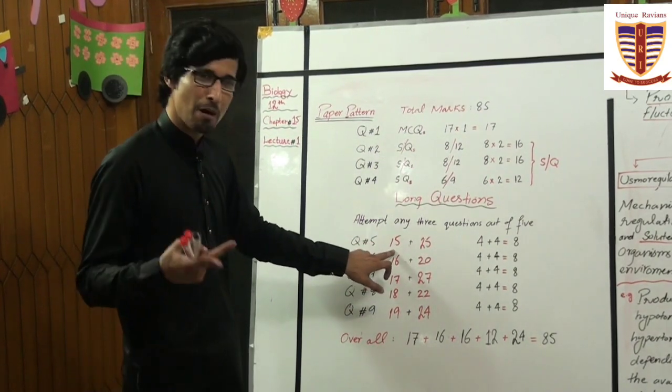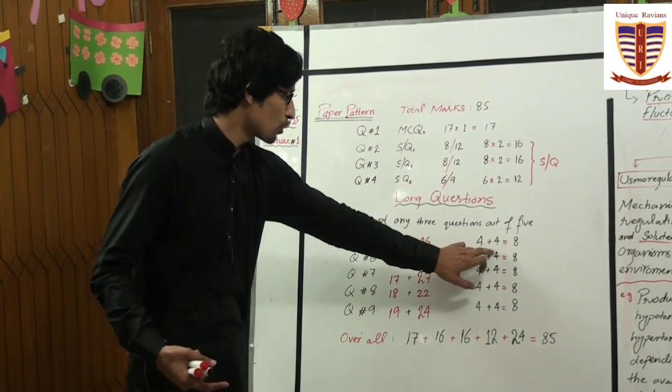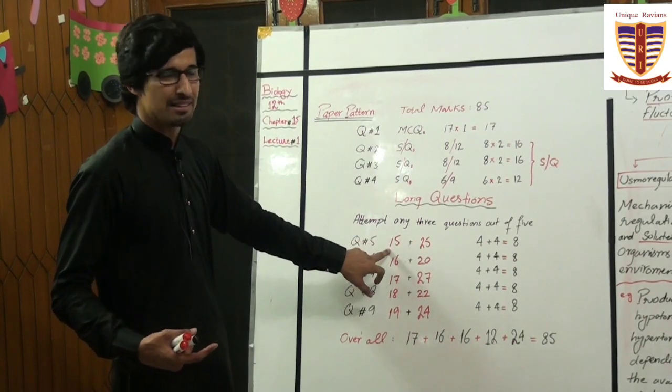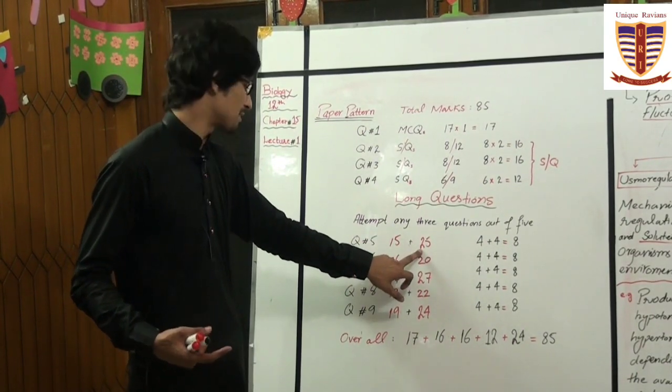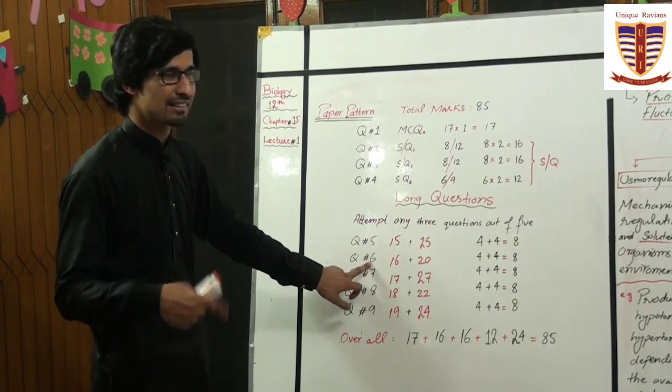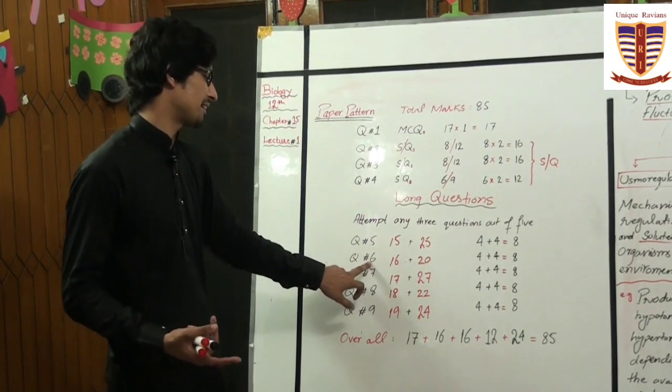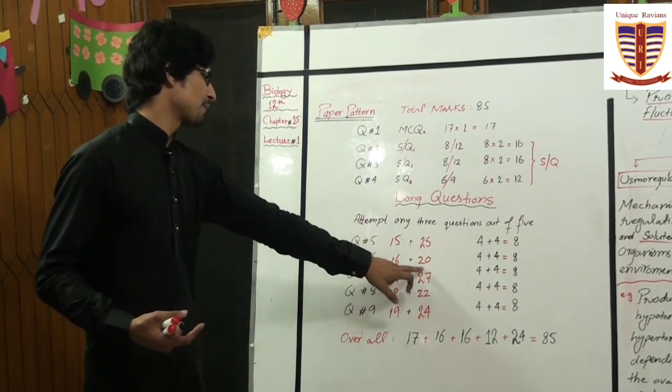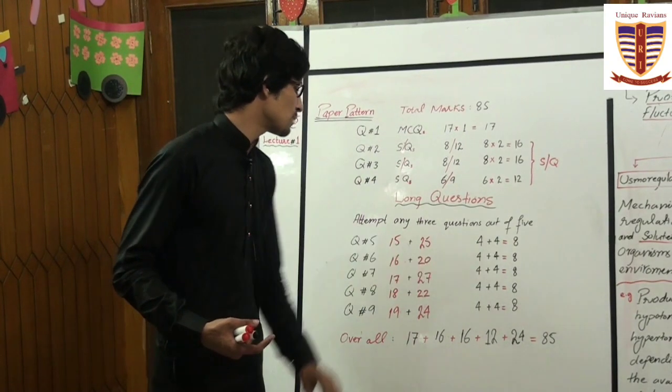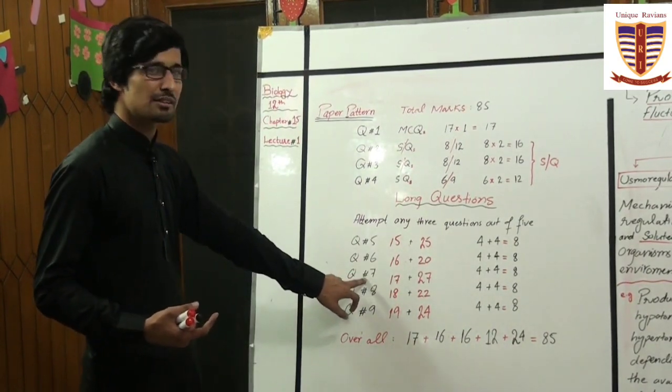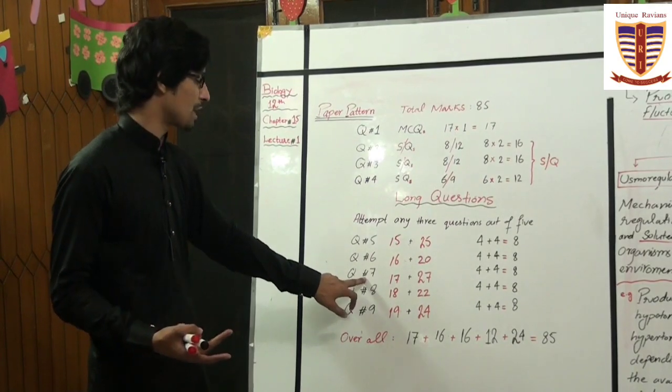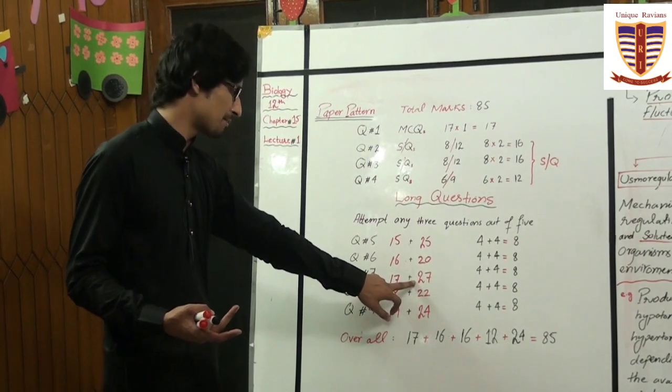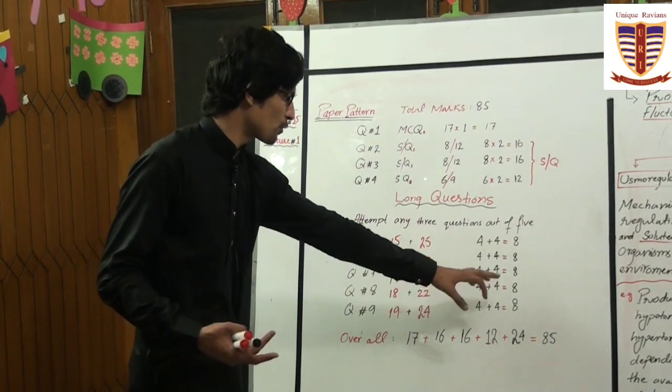Question No. 6 is the second long question. Question No. 7 has two parts: the first part is from Chapter No. 17 and the second part is from Chapter No. 22, making 4 plus 4 equal to 8 marks.